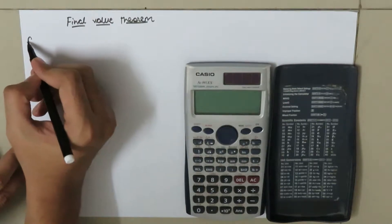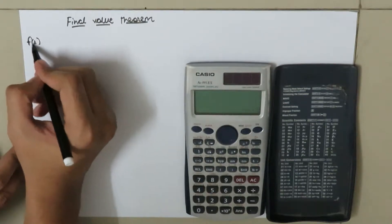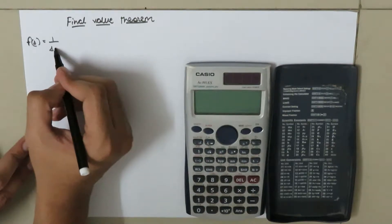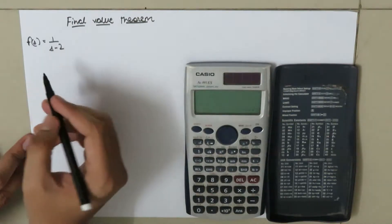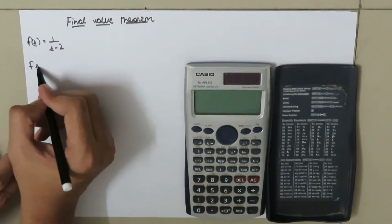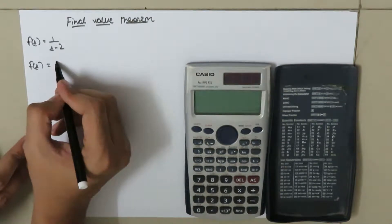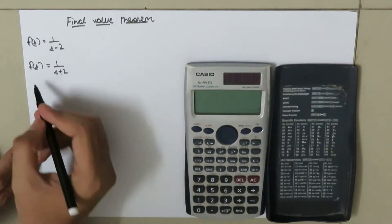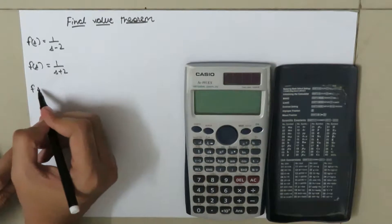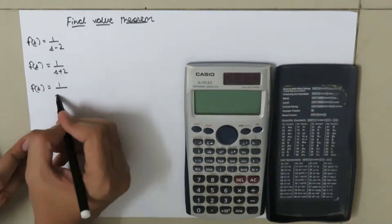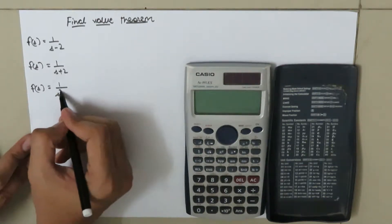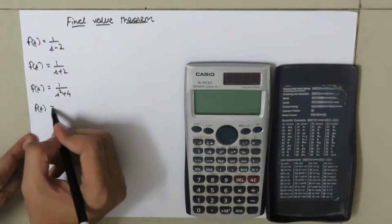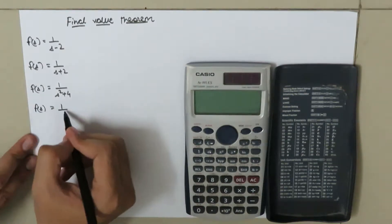The first transfer function F(s) is equal to 1 over (s minus 2). The second transfer function F(s) is equal to 1 over (s plus 2). The third transfer function is F(s) equal to 1 over (s squared plus 4). And the fourth transfer function is F(s) equal to 1 over s.